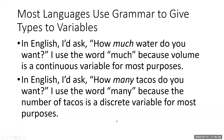Most languages use grammar to divide the world into different types of variables. In English, you'd ask 'how much water do you want?' using 'much' because volume is a continuous variable for most purposes. And you'd ask 'how many tacos do you want?' using 'many' because the number of tacos is a discrete variable for most purposes.